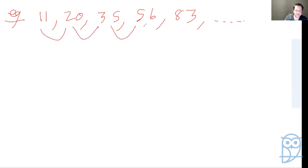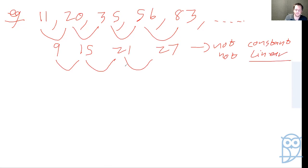This is a question from a paper. So once again, let's quickly work out our differences. 11 to 20 is 9, 20 to 35 is 15, 35 to 56 is 21, 56 to 83 is 27. This is not constant, so not a linear or arithmetic. Our next difference is 9 to 15 is 6, 15 to 21 is 6, 21 to 27 is 6. This is constant, which means it is quadratic.